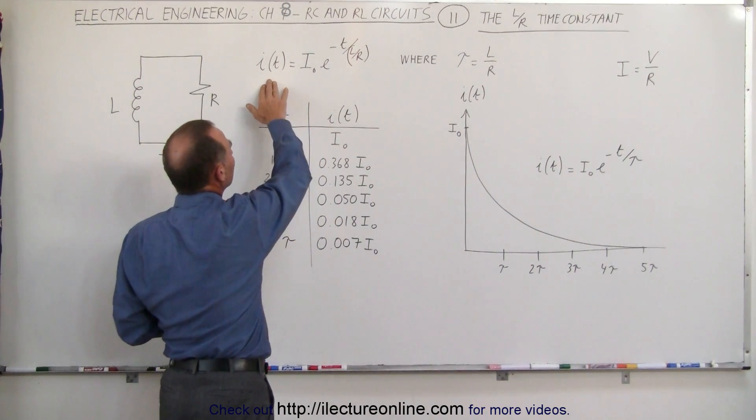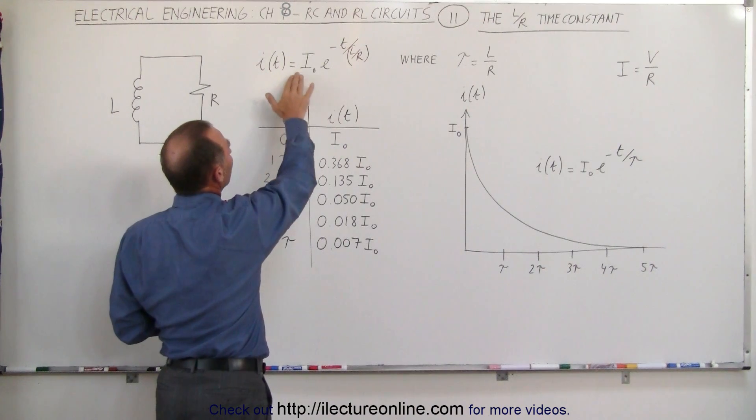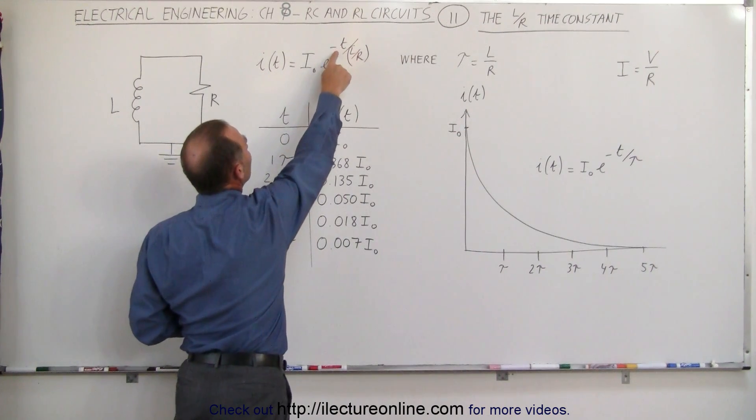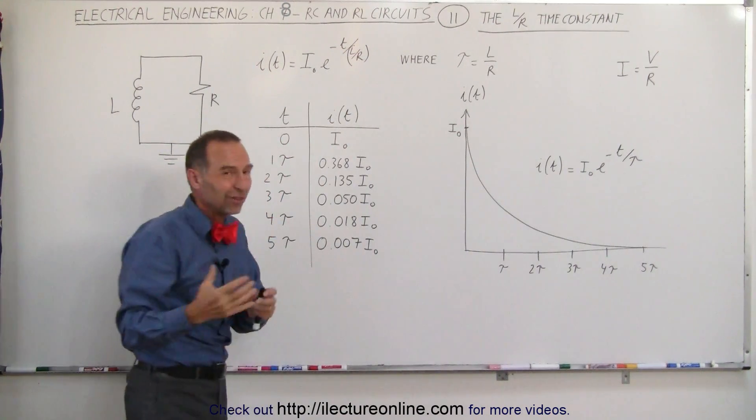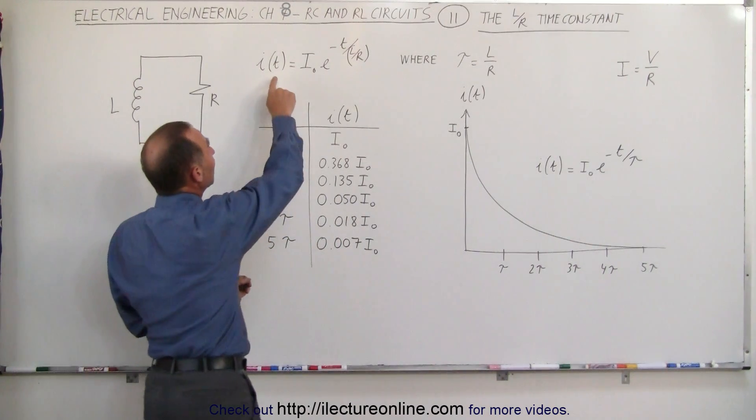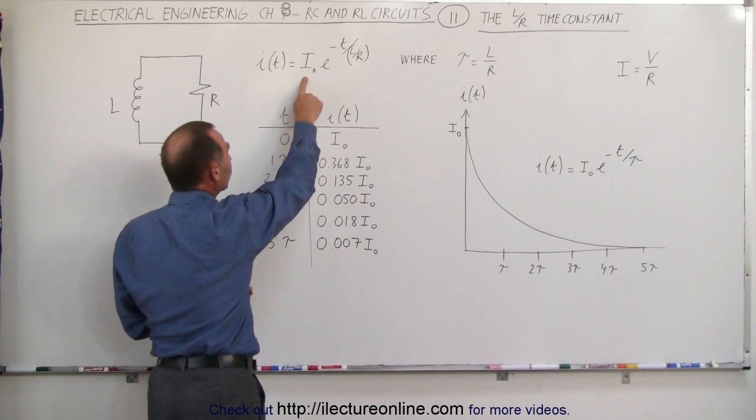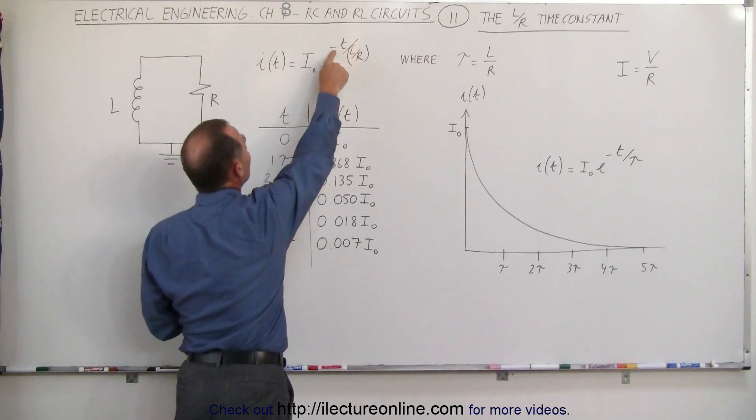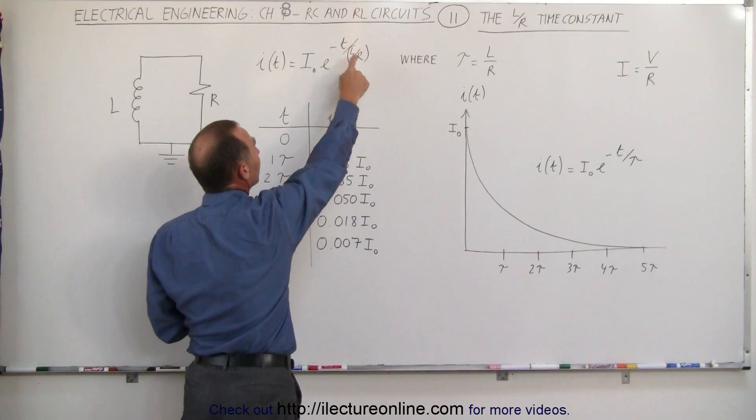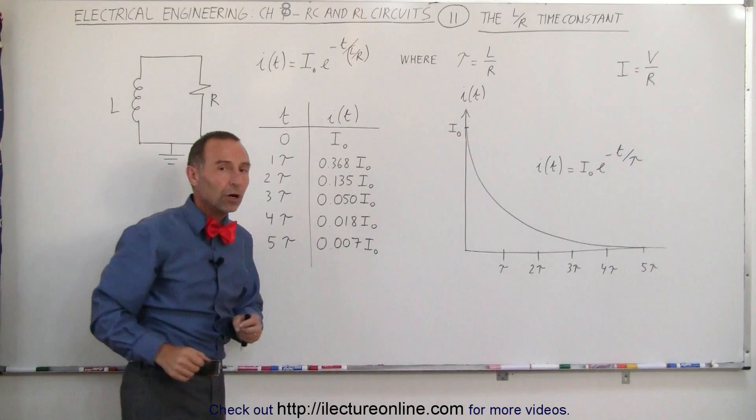Notice that in the RC circuit we had V equals V initial times e to the minus t over tau, the time constant, which in that case was R times C. Where in this case it's the current is equal to the initial current times e to the minus t over tau, where the time constant here is L over R.